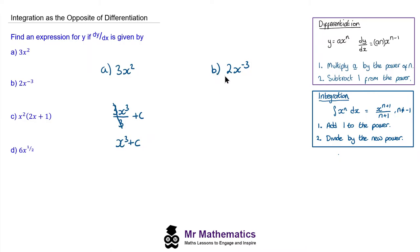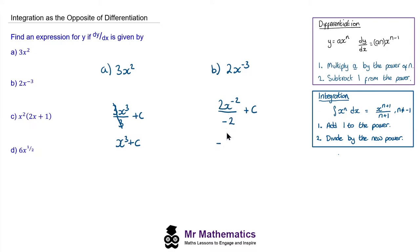For question b, even though we've got a negative power, the rule remains the same. We've got 2x to the negative 3. We add 1 to this power of negative 3 so it becomes negative 2, and then divide by the new power of negative 2, and add the constant term. 2 divided by negative 2 is negative 1, giving negative x to the negative 2. We can write it as a power or as a fraction, plus the constant term.